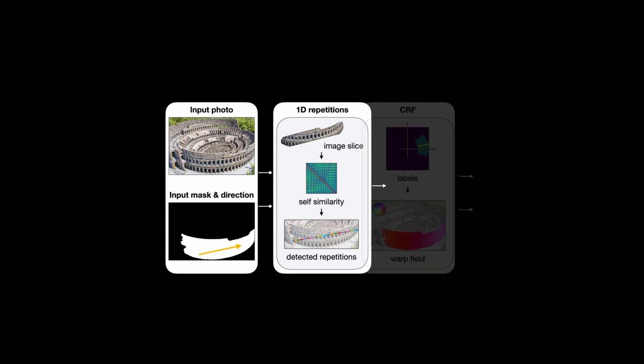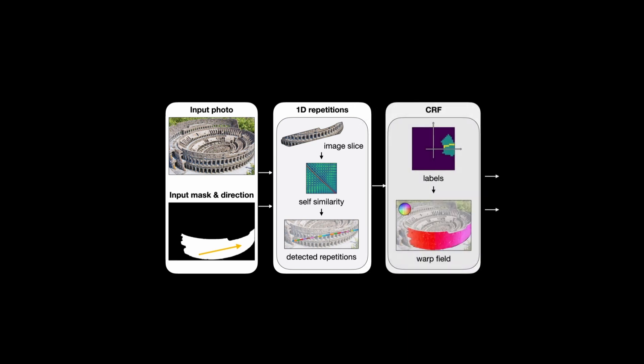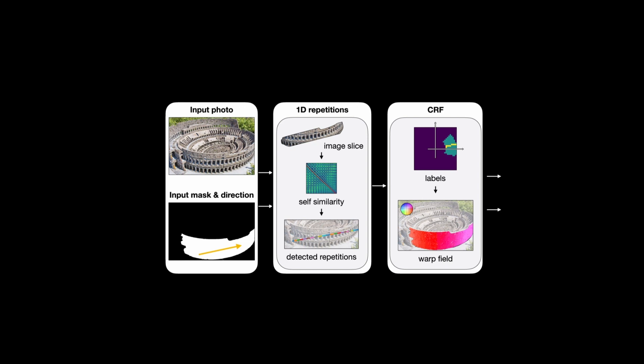However, the real motion is in 3D and more complex. We use the dynamic programming output as labels for conditional random field optimization, which assigns a motion vector for every pixel. The resulting smooth motion field is much more accurate compared to the initialization, as it is no longer limited to 1D.